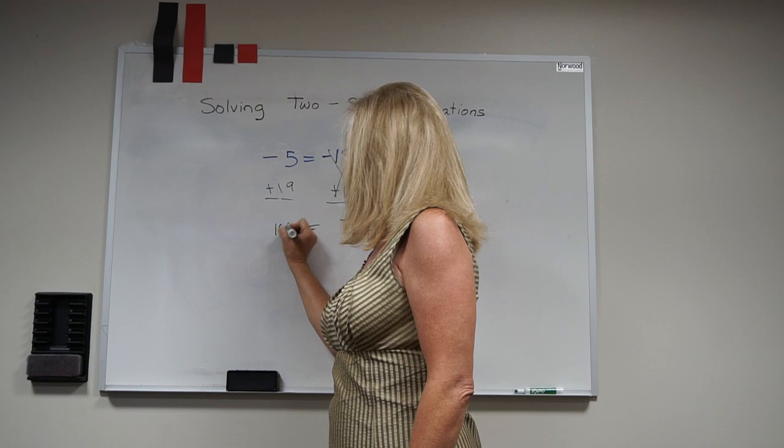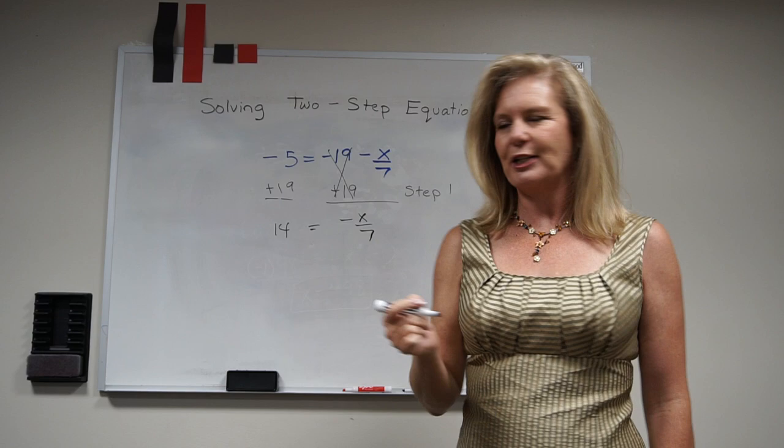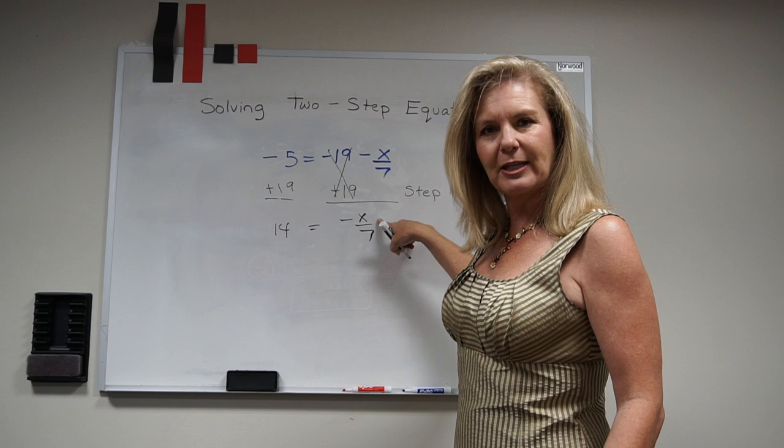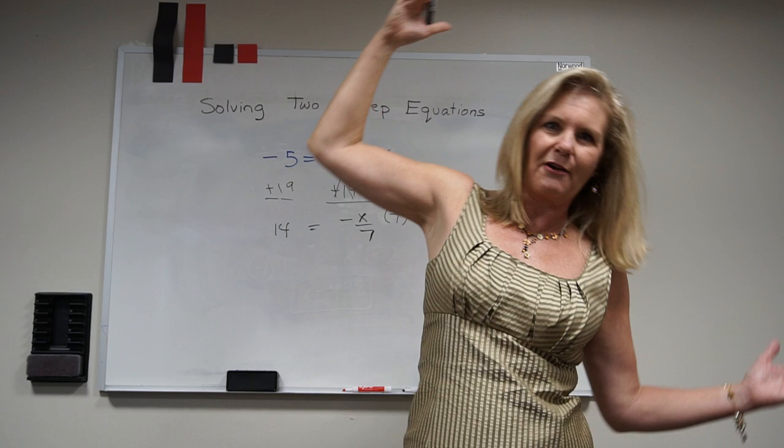But I'm not done yet - that was just my step 1. So my second step is I'm going to have to reverse out my multiplication or division. Now when I look at this, I see negative x divided by 7, so the inverse operation of division is multiplication. So I'm going to multiply by 7, but the second I did that I went out of balance. And in order to pull myself back into balance, I need to do exactly the same thing on the other side.